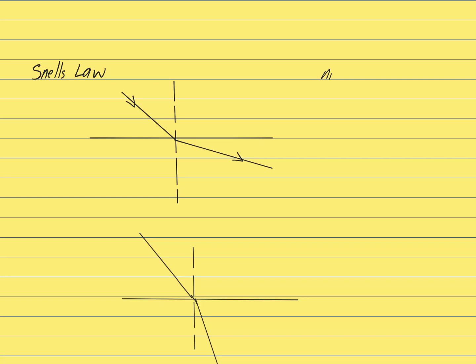So this is the formula: N1 sine theta 1 equals N2 sine theta 2. Now let's have a look at what these things are.